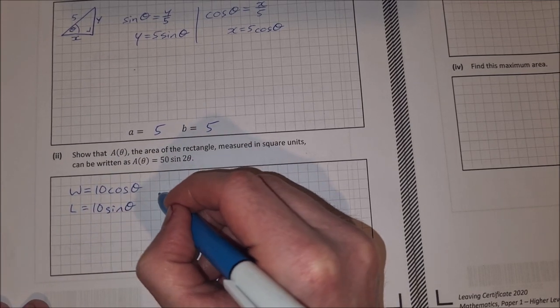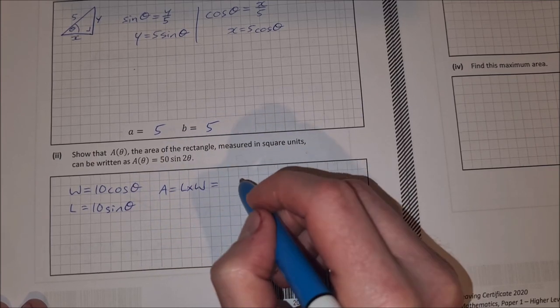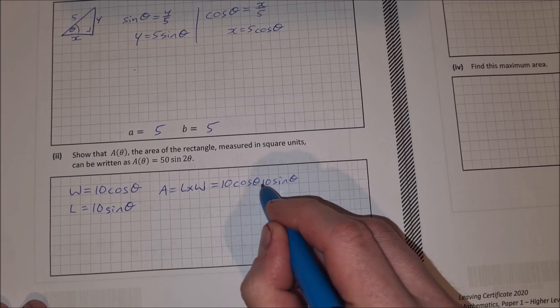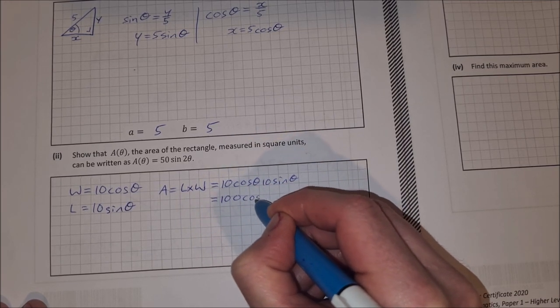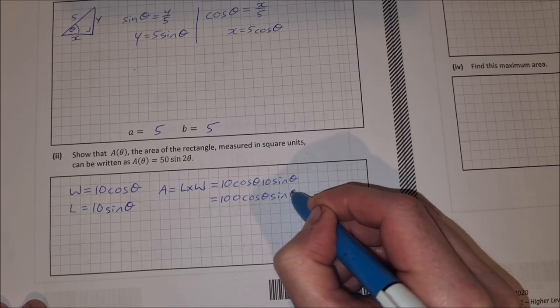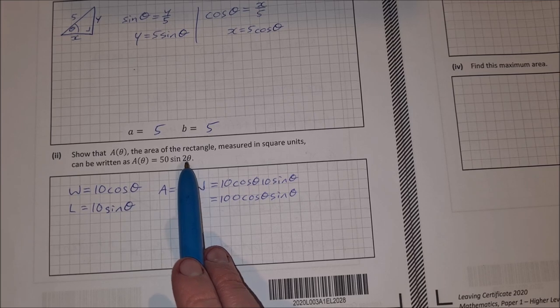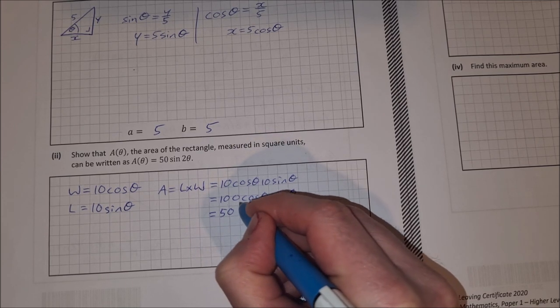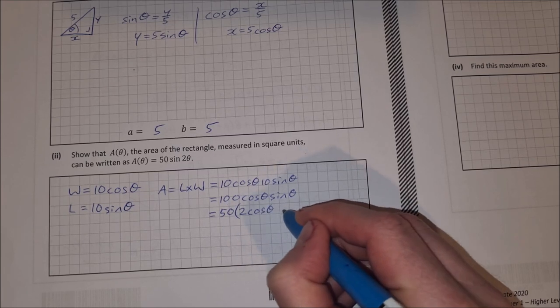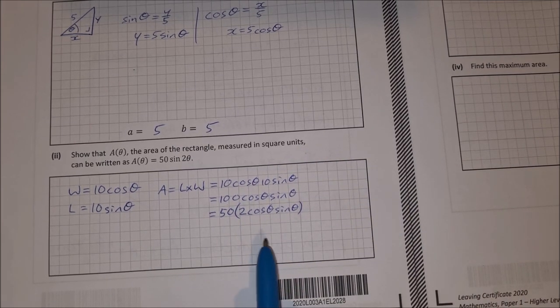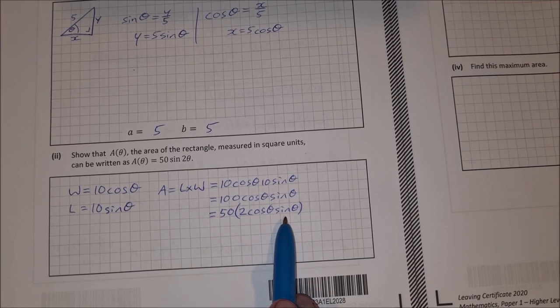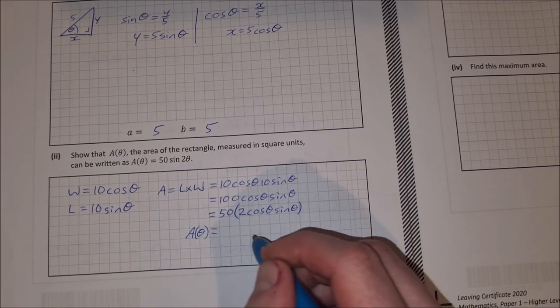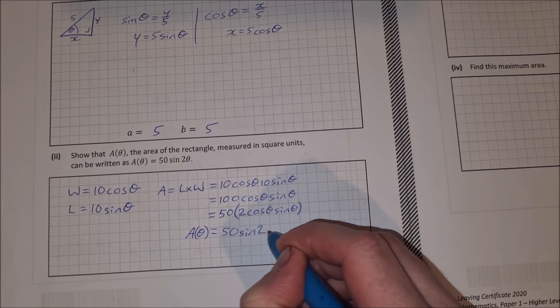So then area is equal to length by width. So that's equal to 10 cos theta by 10 sine theta. We can multiply 10 by 10 to get 100 cosine theta sine theta. Now we want to have 50 sine 2 theta. So what we can do with this, we can get the 50 straight away by factorizing the 100 and say that the 100 is 50 times 2 cosine theta sine theta. And then if you go to your log tables and you find 2 cosine theta sine theta, we can actually write that as sine 2 theta. So that means A of theta is equal to 50 sine 2 theta.